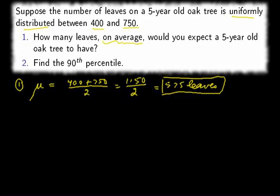Find the 90th percentile. So this is the number of leaves that we would expect only 10% of trees to have above, or 90% of trees to have less than or equal to this number.